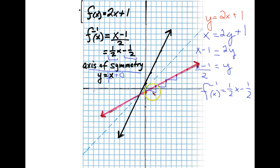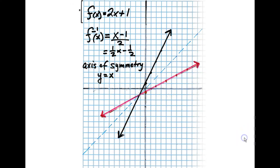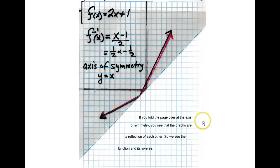Now, an interesting thing about this function and its inverse is, if we take a paper, this is a transparency actually, and if I fold it right along this axis of symmetry here, this is what happens.